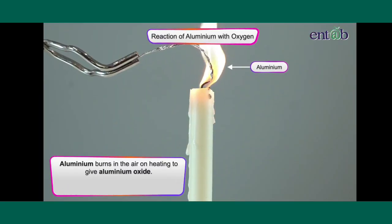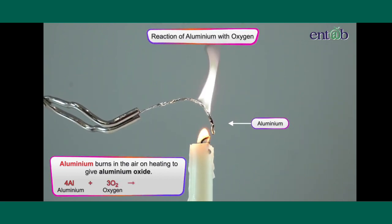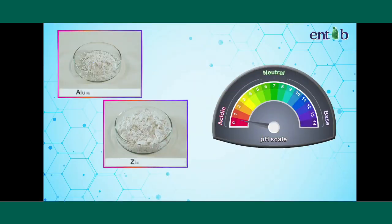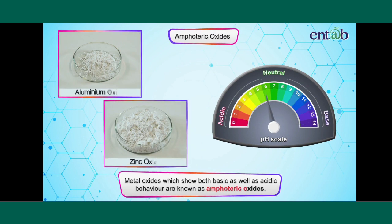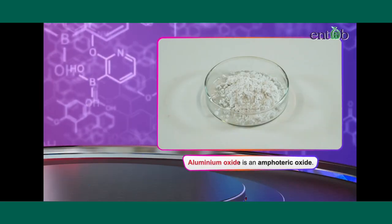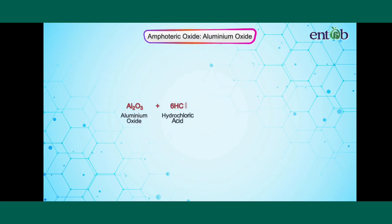On heating in air, aluminium burns with a white flame to give aluminium oxide. Some metal oxides show both basic as well as acidic behaviour — such metal oxides are known as amphoteric oxides. Aluminium oxide is one such amphoteric oxide.